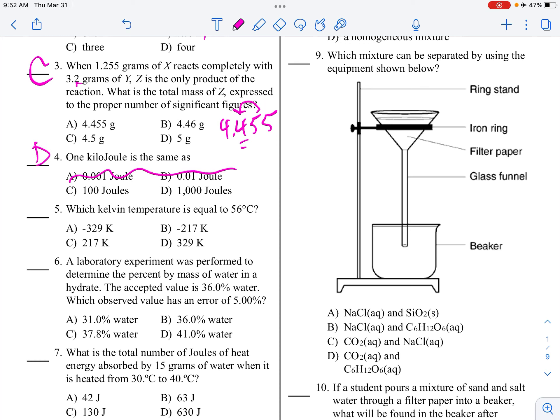If a student pours a mixture of sand and salt water through a filter paper into a beaker, what will be found in the beaker after filter? So in the beaker means coming through the filter. So the salt water, its homogeneous mixture, that will come through, all of it, the salt and the water. The sand will remain. A mixture of sand and salt can be separated by filtration because the substances differ in solubility in water. The salt will dissolve in water, so it will pass through the filter. The sand won't dissolve in water, so it will stay.